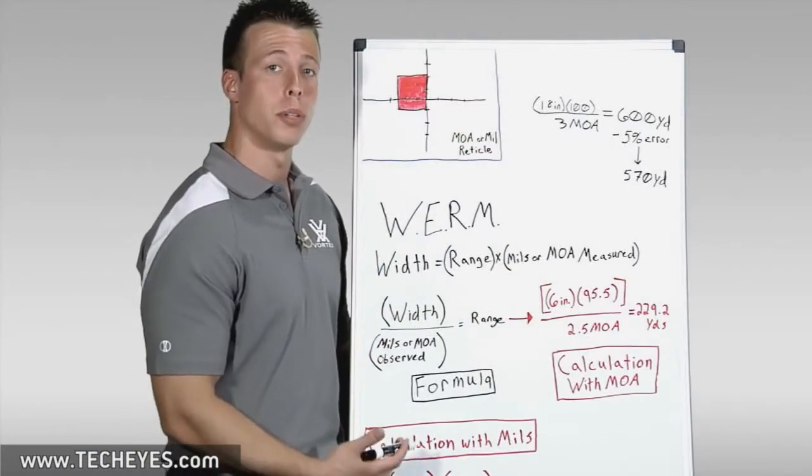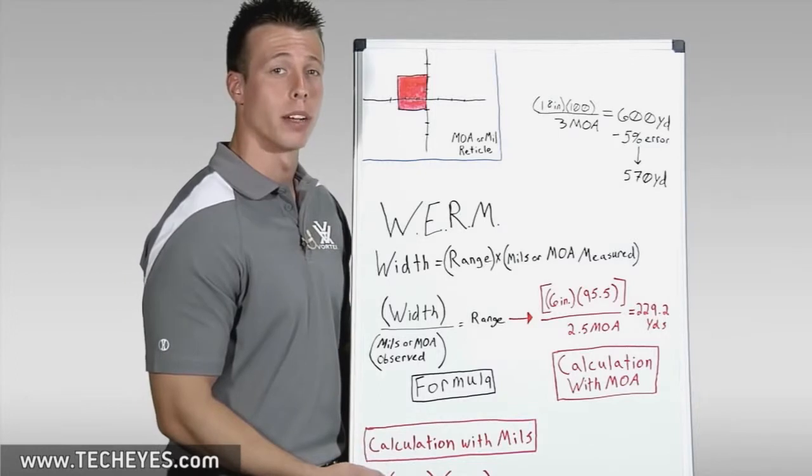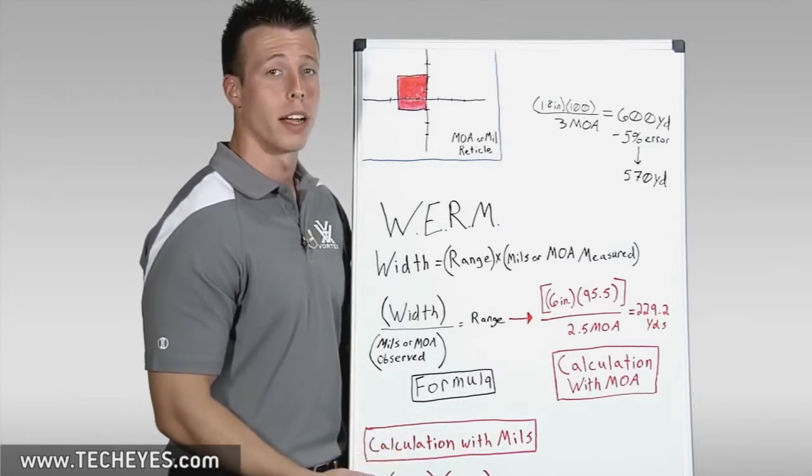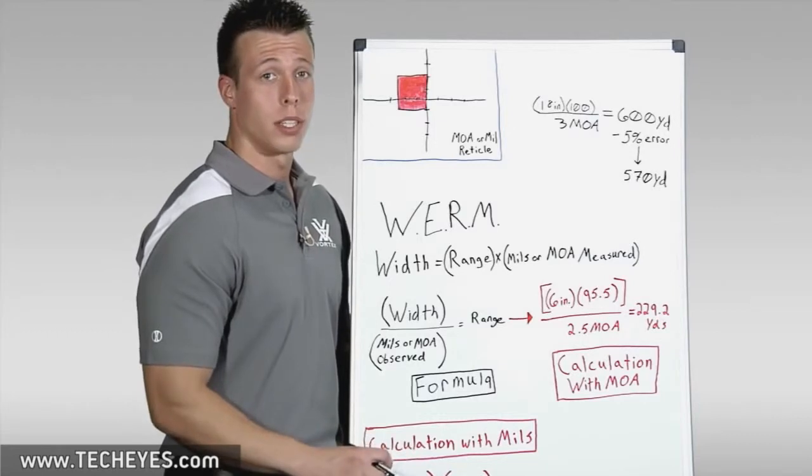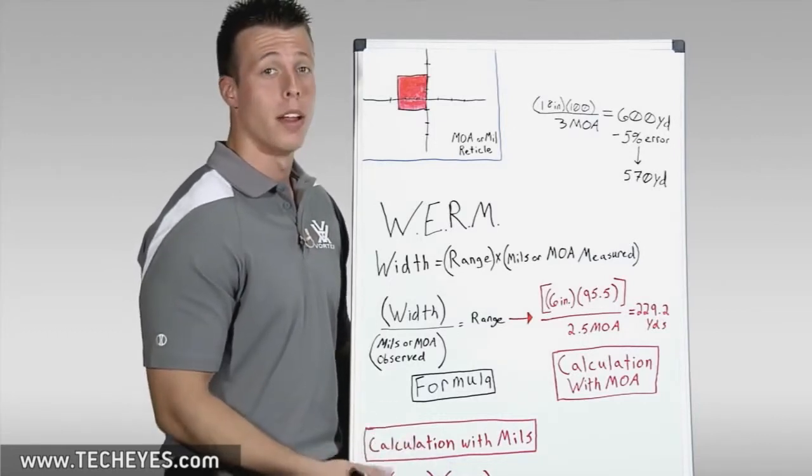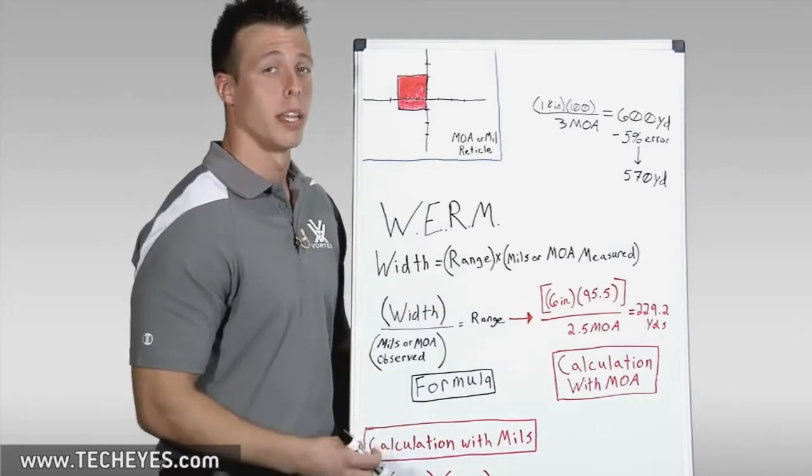At Vortex Optics, we produce and promote riflescopes that have both minute of angle and milleradian reticles for estimating distance of the target. However, we don't promote any one over the other. There is no such thing as better or worse than the other. We encourage you to find out for yourself which one will work best for you and your intended purposes.